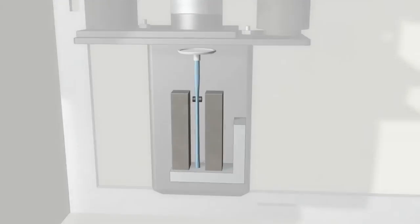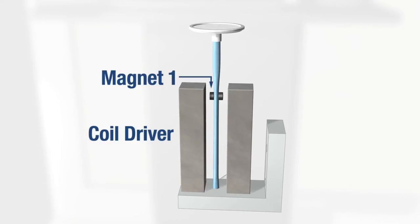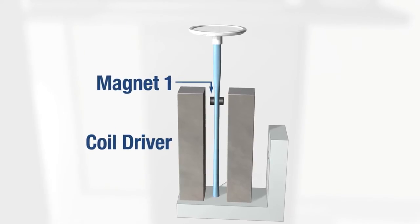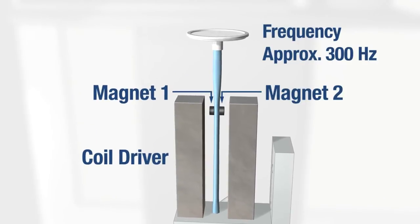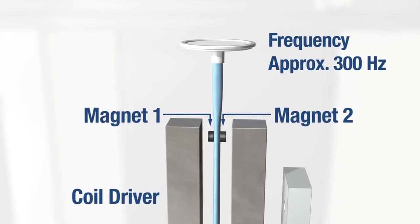Let's take a look at how the TEOM works. A coil driver pulsates against a magnet on the tapered element to initiate an oscillating movement. An opposing magnetic field maintains the natural oscillation.